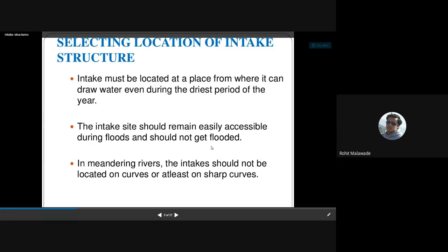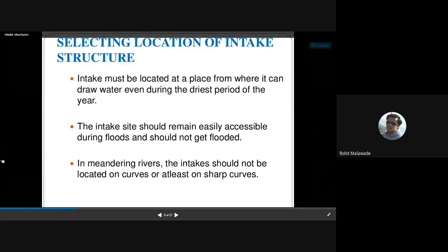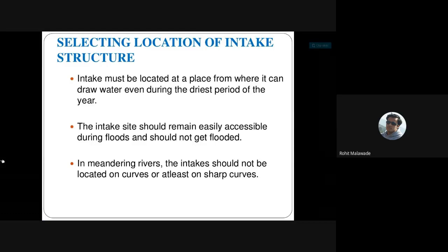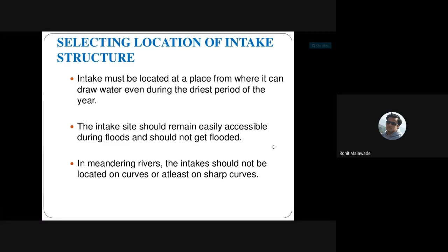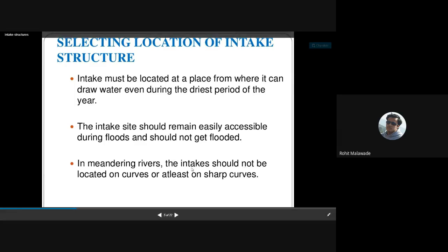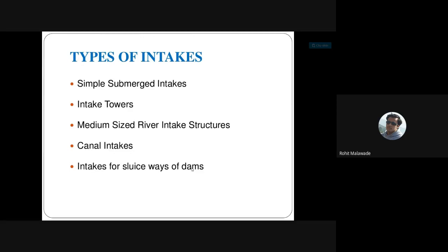The intake site should remain easily accessible during floods and should not get flooded. During the rainy season the source fills with water, and the intake structure should not get submerged, because if pumps are affected by flooding, the downstream site requiring water will also be affected. The intake structure should never be located in a flood-prone zone, and it should not be located at sharp curves of the river.